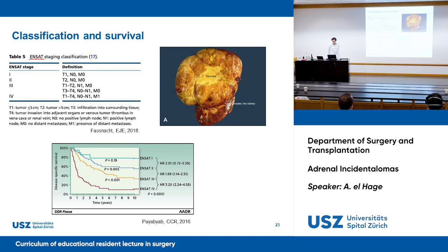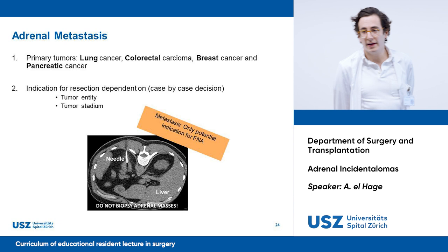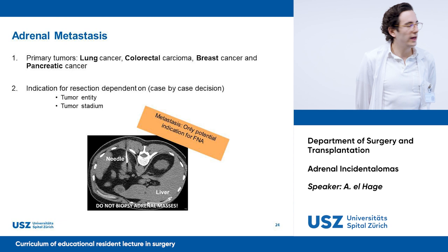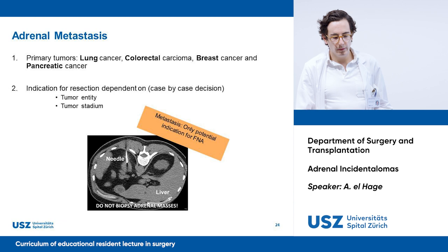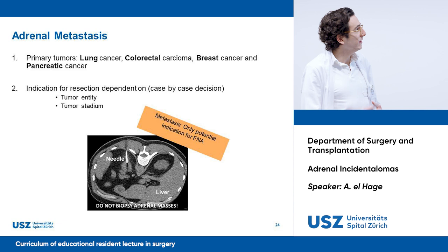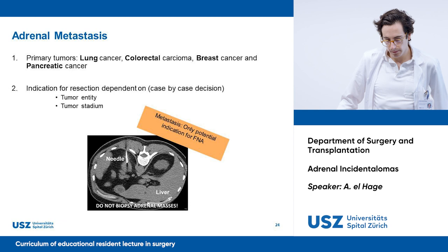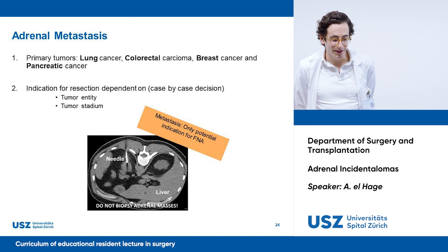Adrenal metastases — the primary tumor is usually lung, colorectal, breast, or pancreatic cancer. Indications for surgery are dependent on tumor entity and stage. For example, if you have a patient with colorectal cancer and a metachronous single metastasis, it would make sense to perform adrenalectomy. Regarding biopsy in incidentalomas: we don't perform biopsies unless it is a metastasis, because then there's a potential indication for it.